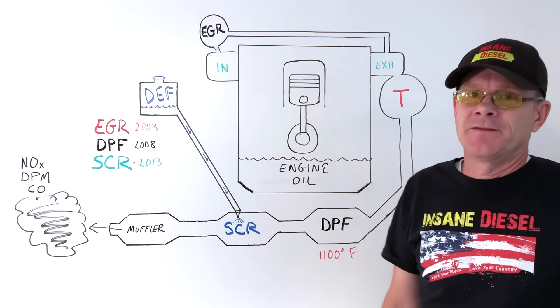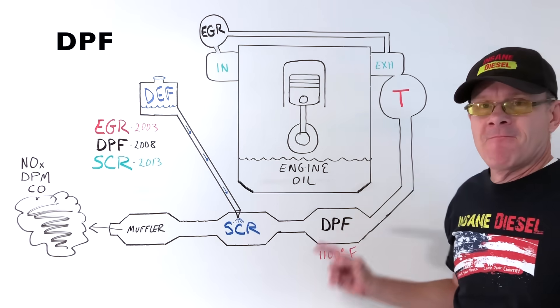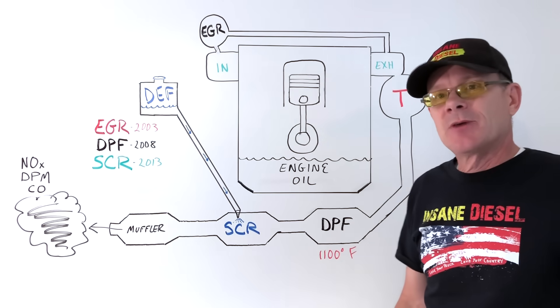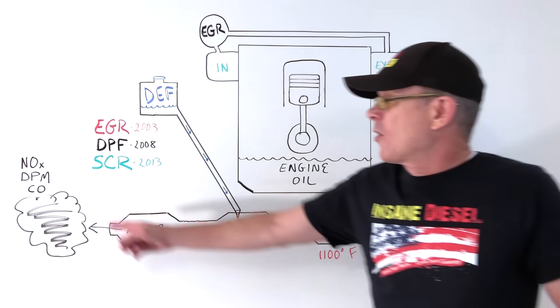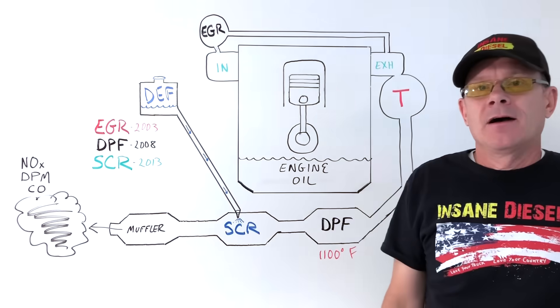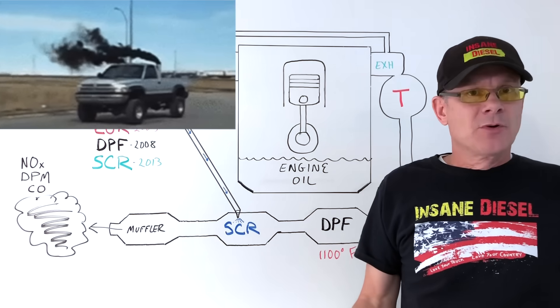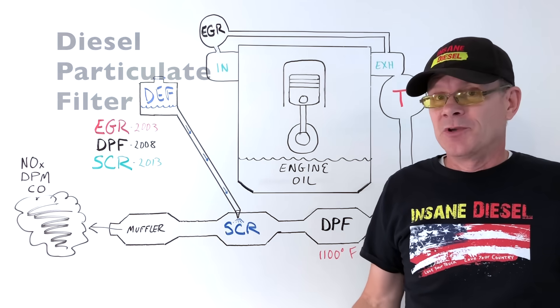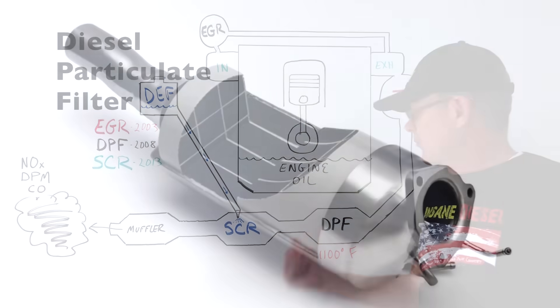Alright, now let's go on to the diesel particulate filter, the DPF. In your 2008 model year engines, the EPA required diesel engines to address the DPM, or diesel particulate matter, or soot, which is partially burned diesel fuel that's coming out the tailpipe. The DPF is also run by the engine computer. It catches soot particles in a fine screen.